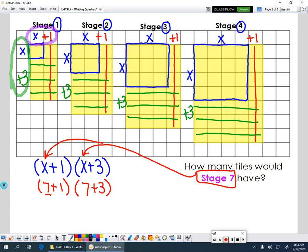And then to find how many total tiles would be in here, I just do this problem. 7 plus 1 is 8. 7 plus 3 is 10. So then we have 8 times 10. Again, that would give me 80 tiles in a stage 7 shape.